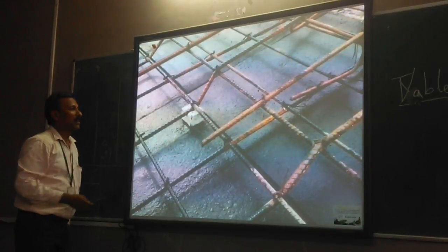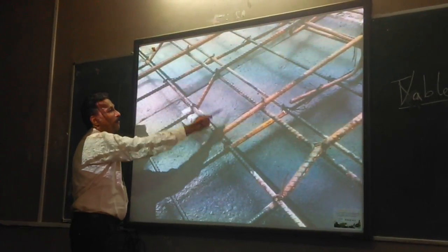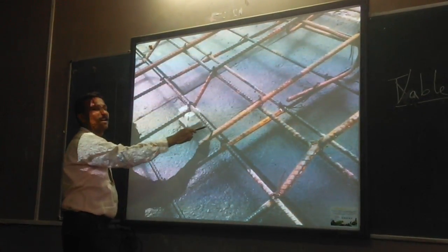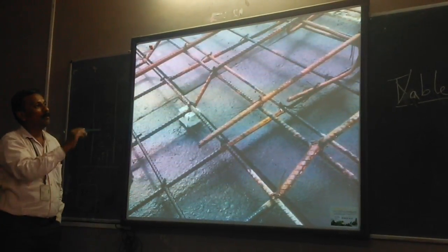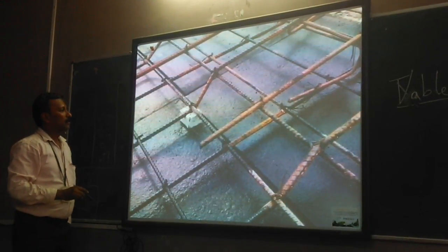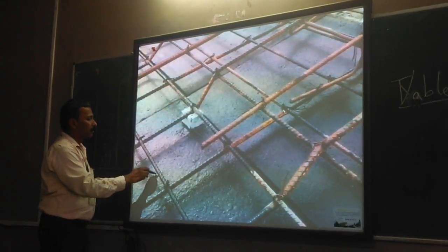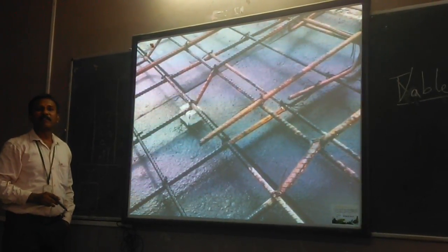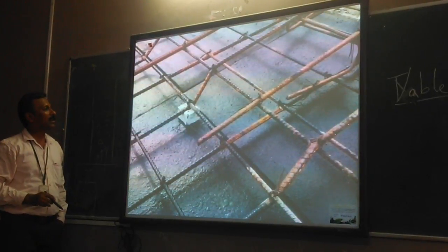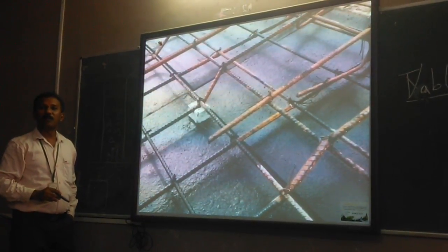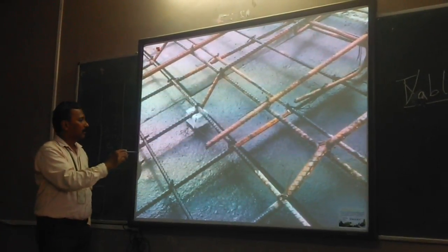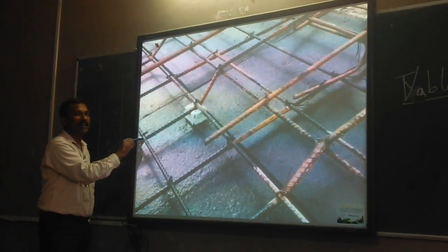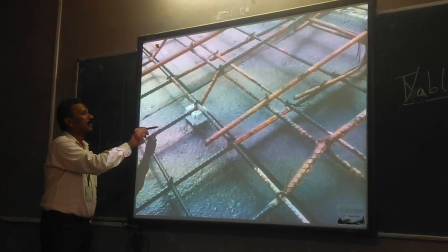This is the main reinforcement. Alternative rods are also provided, and these are generally called external reinforcement. These reinforcements are necessary to maintain the spacing. These are distributary reinforcements, generally provided at a diameter of 6mm or 8mm for smaller spans. At the mid-span portion, these distributary reinforcements are provided at the top of the main reinforcement.